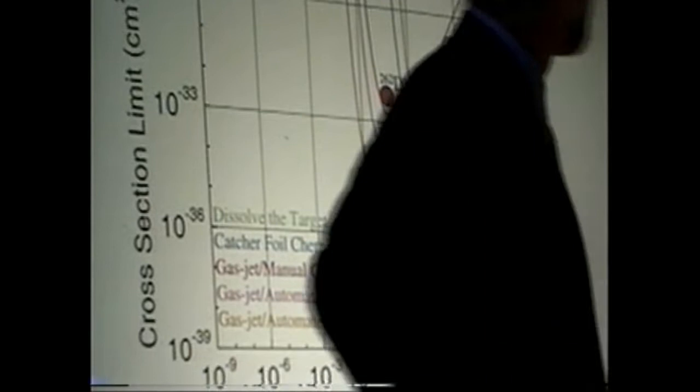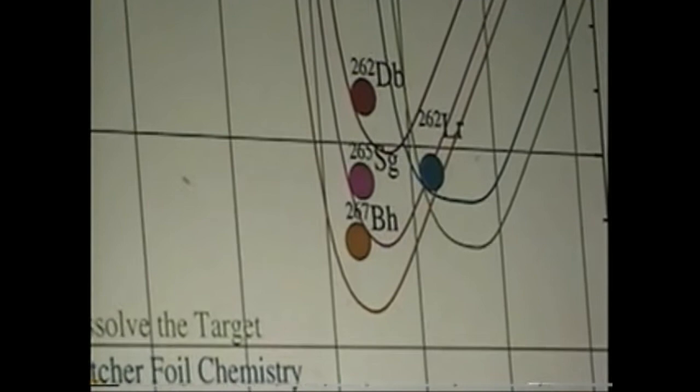And last, I have the yellow curve. It was supposed to be orange. What is this gas jet? And now we're talking about the gas-based chemistry.